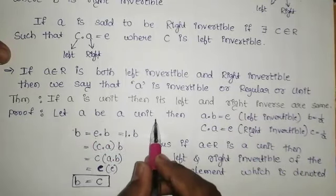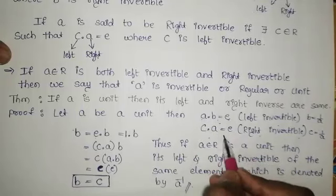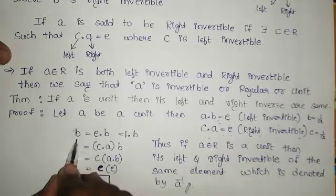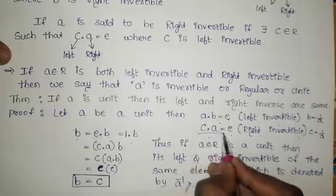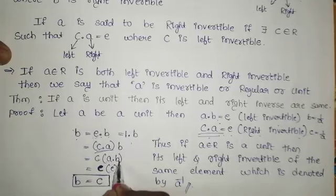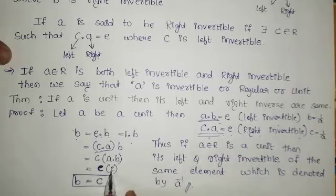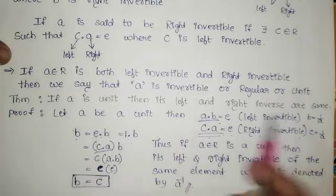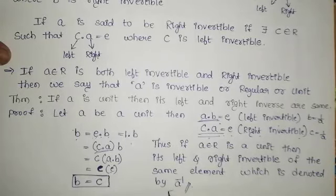Taking A as a unit, by definition of left invertible and right invertible, A times B equals E and C times A equals E. Consider B equals E times B, substitute E as C times A, keeping B as it is. Bring A outside giving A times B, which by left invertible definition equals E. Then C times E gives C. Therefore B equals C — left and right inverse are the same, denoted A⁻¹.